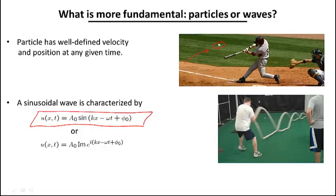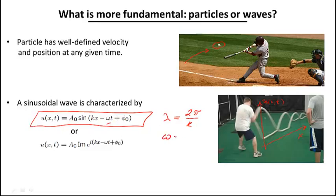In this expression, u is the displacement — in this particular example u is the vertical displacement, which is a function of the coordinate and time, and the x coordinate is the horizontal direction. For a simple sinusoidal wave, this is the kind of expression we are going to get. The relation between the wavelength and the wave vector is: lambda equals 2π over k. The relation between the frequency omega and the velocity of the wave is that the velocity is the coefficient of proportionality between omega and k.